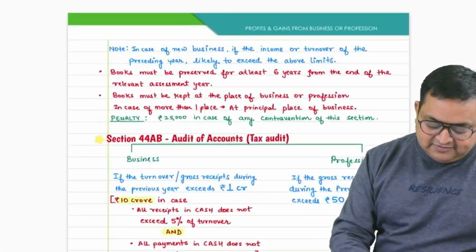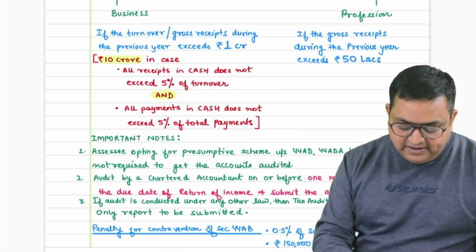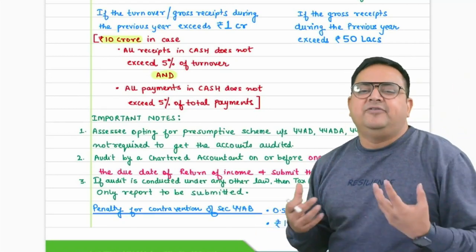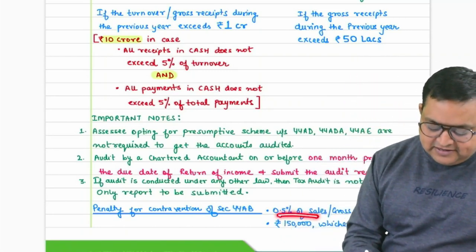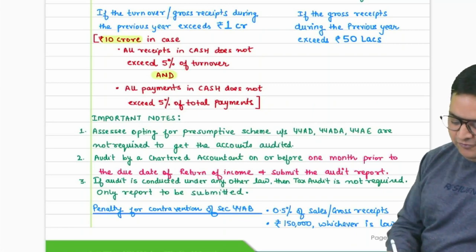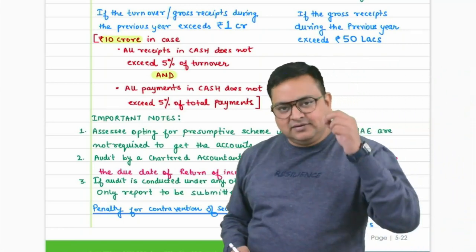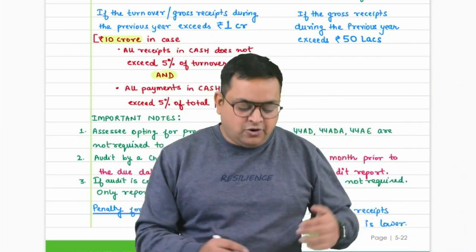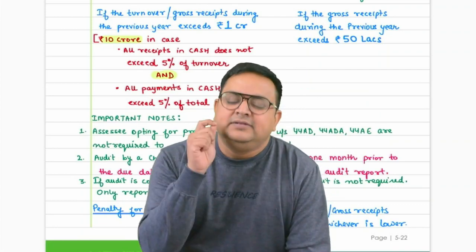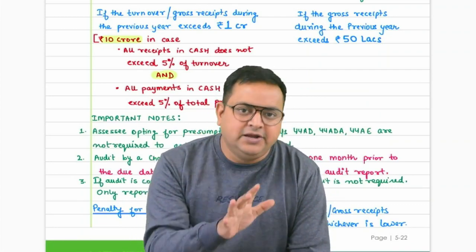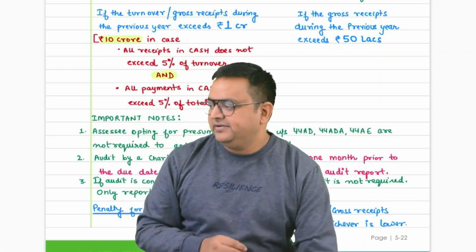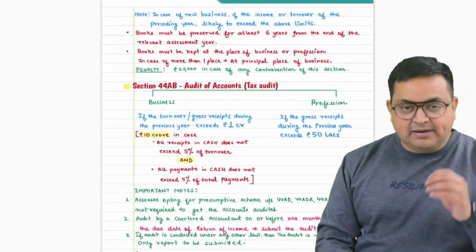Penalty for non-compliance with Section 44AB: 0.5% of sales or gross receipts (as applicable) or ₹1,50,000, whichever is lower. Please remember this penalty amount. Compare this to the ₹25,000 penalty for Section 44AA — the tax audit penalty is larger. If you are required to get books audited and fail to do so, income tax will levy this penalty.